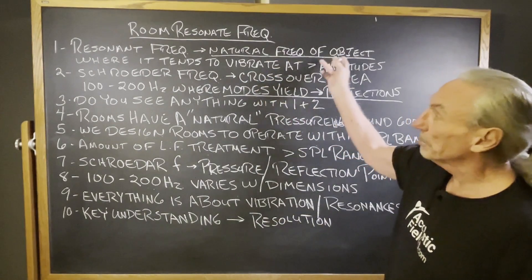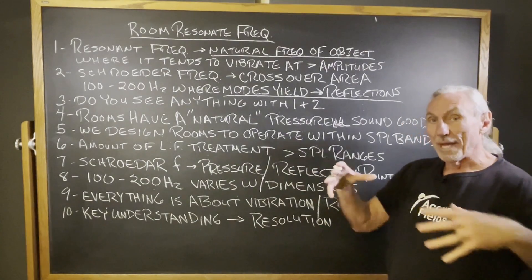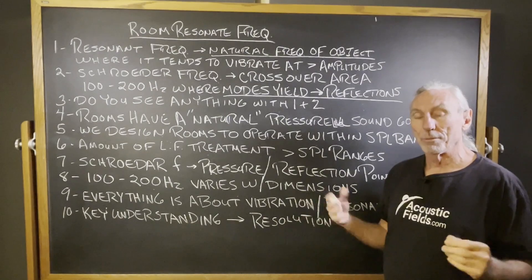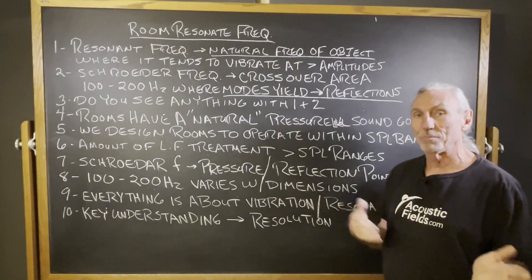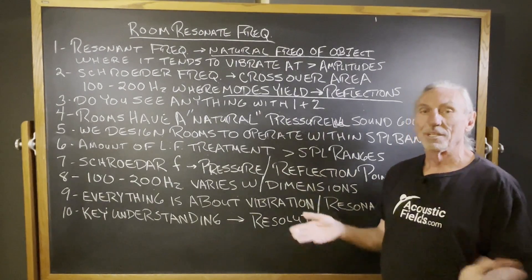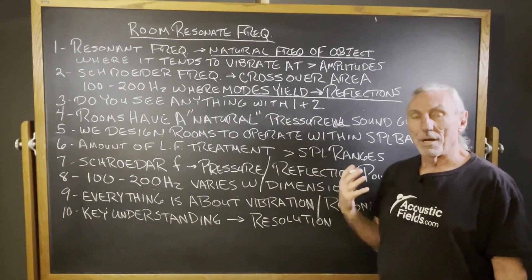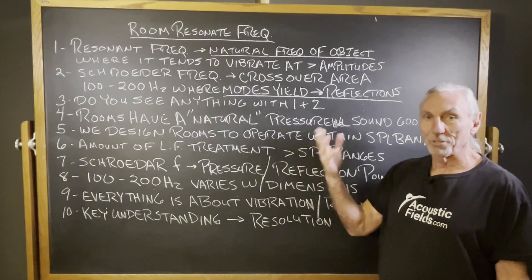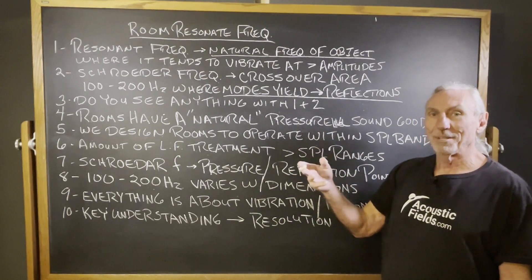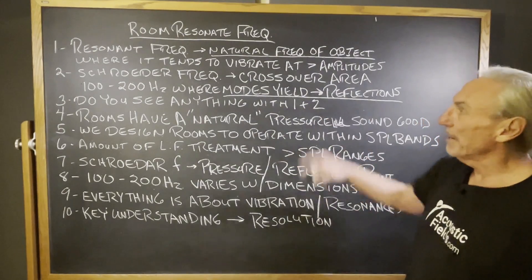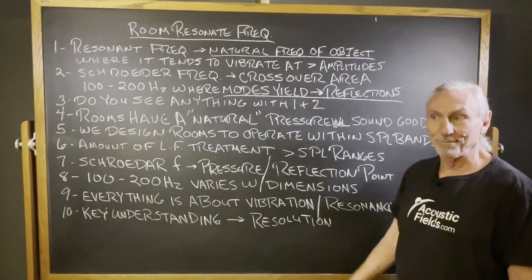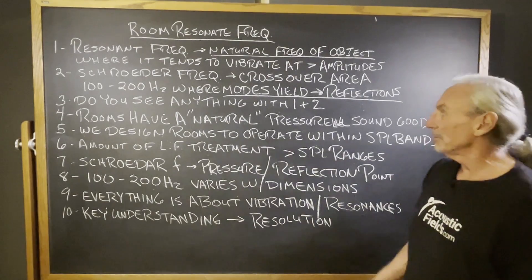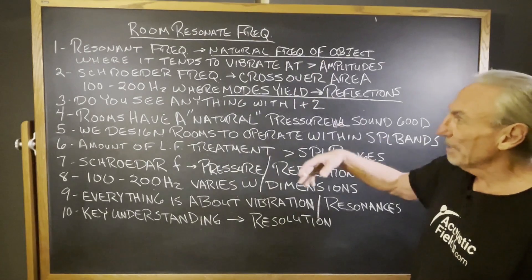Resonant frequency is a natural frequency in an object where it tends to vibrate at greater amplitudes. I don't know how many of you are old enough to remember the Memorex commercials — 'Is it Memorex or is it live?' — where they would tape a person singing at a certain frequency, and then they'd have a piece of crystal or china or glass that responded to that resonant frequency. They just increased the amplitude and the glass shattered. It's just energy, right? The glass just sees the energy. So that's a good example of resonant frequency.